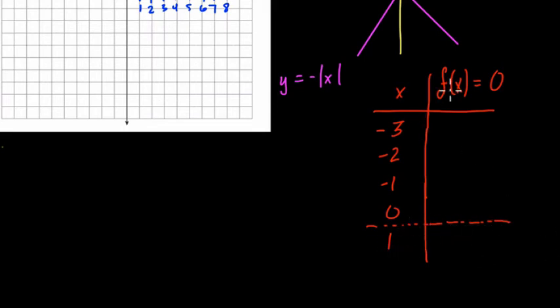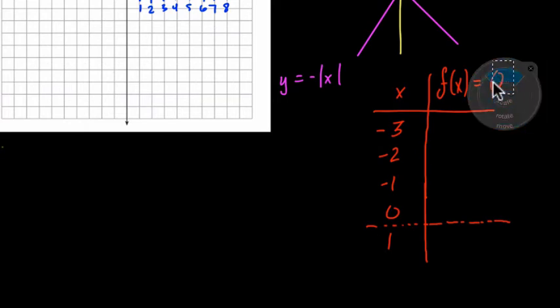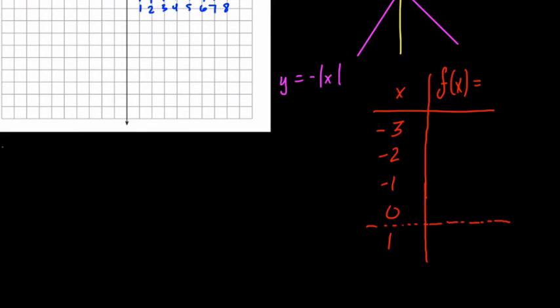So if we plug in negative three to the absolute value of x, where is that right here? f of x does not equal zero. I don't know why I wrote that. Oh, boy. f of x equals the absolute value of x. So if I plug in negative three for x, what's the absolute value of negative three? Well, absolute value is distance from zero, so it's just three.